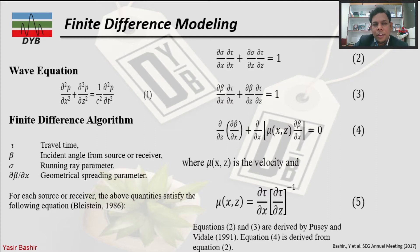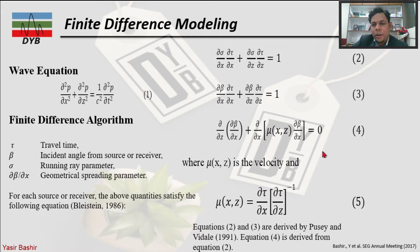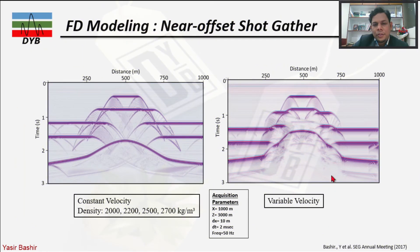The finite difference modeling follows the wave equation — specifically the two-way wave equation. The finite difference algorithms follow these principles: equations two and three are derived from Boissy and Weidel (1991), and equation four, which is the core of finite difference modeling, is derived from equation two, finally using velocity as one.